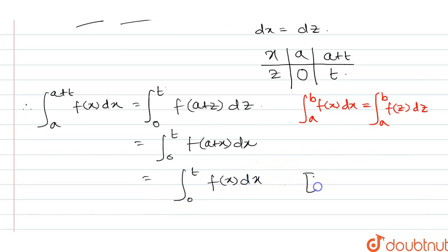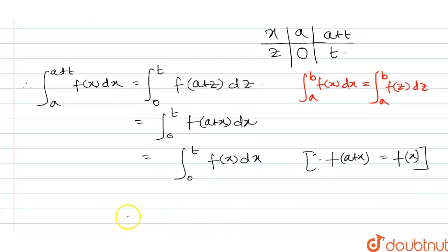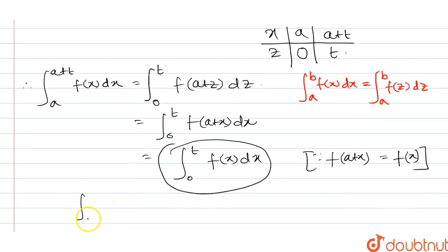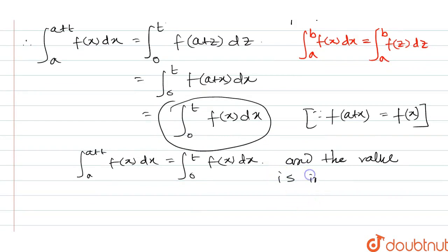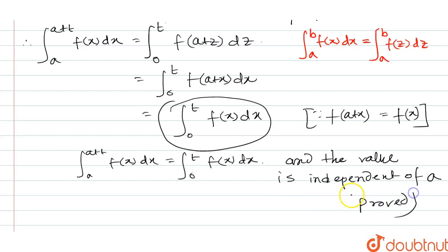Because f of a plus x equals f of x, due to the periodic function. So I am going to get the final value. The integration from a to a plus T of f(x) dx equals the integration from 0 to T of f(x) dx, and this value is independent of a. So that is how we prove it. Thanks for watching this video.